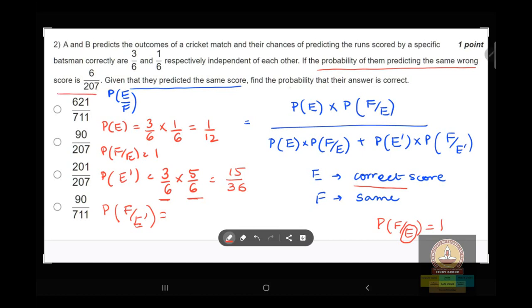We have to find the probability of the answer to be correct, which would be P(F|E), so just substituting the values: 1/12 times 1, again 1/12 times 1...